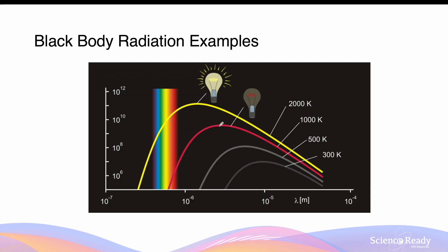This model of blackbody radiation can be observed in different types of light bulbs. An incandescent lamp predominantly emits infrared radiation and a very small intensity of red visible light, resulting in light that is dim and red. In contrast, light bulbs emitting a greater intensity of visible light such as yellow and orange appear brighter. This difference in appearance is attributed to temperature: the incandescent filament has a lower temperature of roughly 1000 kelvins compared to the brighter yellow bulb at 2000 kelvins.